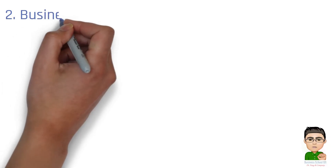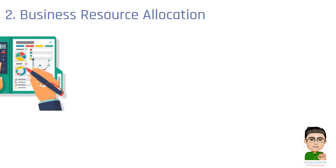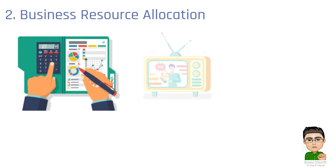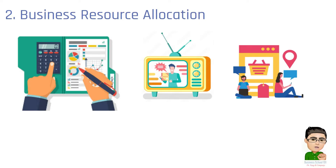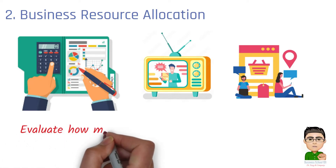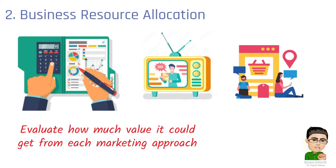Number 2: Business resource allocation. A company has to decide how to use its limited marketing budget. It can put more money into TV ads or strengthen its online marketing efforts. If the company decides to focus on TV ads, the opportunity cost is the extra customers and growth that could have come from boosting online marketing. To calculate this cost, the company needs to evaluate how much value it could get from each marketing approach, including looking at past data on conversion rates and customer acquisition costs for different channels.